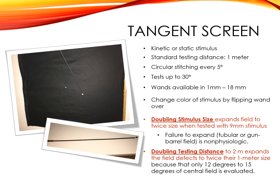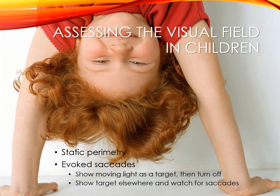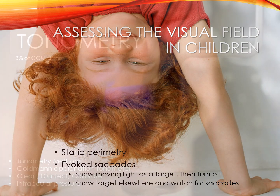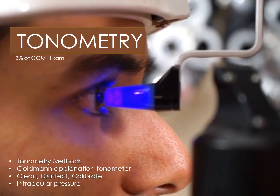It's non-physiologic. Doubling the testing distance to 2 meters also expands the visual field to twice the size it is at 1 meter. To assess a visual field in a child, the best method is static perimetry using a technique known as evoked saccades. In this method, you show a moving target, then turn it off, show the target elsewhere, and watch for the child's saccades.